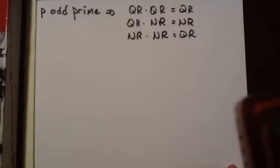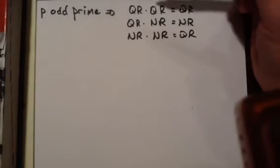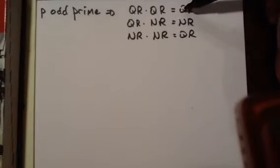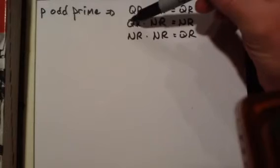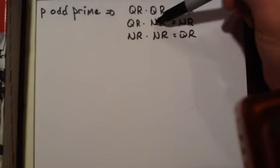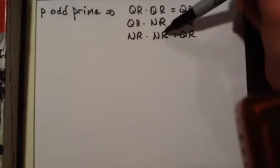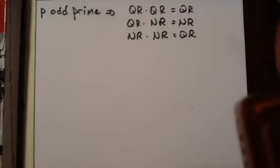Now we are going to prove a couple of basic results about quadratic reciprocity. So if P is any odd prime, the product of two quadratic residues is again a quadratic residue. A quadratic residue times a non-quadratic residue is a non-quadratic residue. And the product of two non-quadratic residues is a quadratic residue.